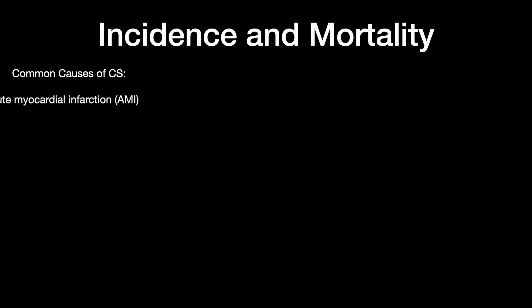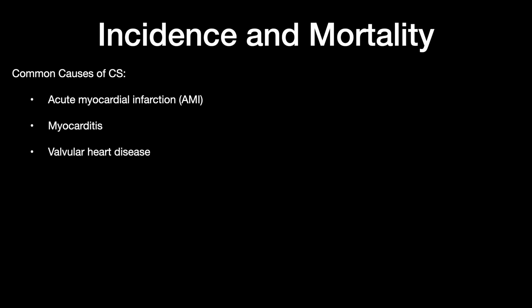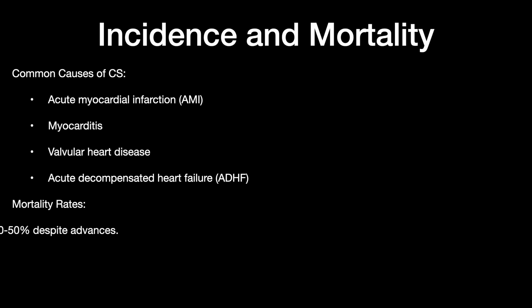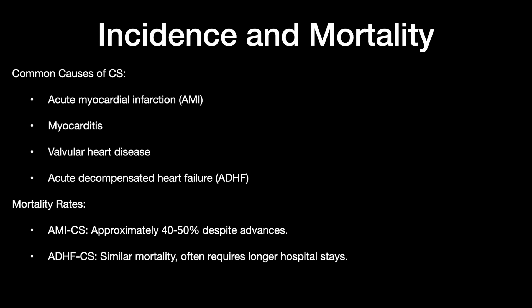Regarding incidence, the common causes of cardiogenic shock include acute myocardial infarction, myocarditis, valvular heart disease, and acute decompensated heart failure. The mortality rate for acute myocardial infarction-related cardiogenic shock is around 40 to 50 percent. In acute decompensated heart failure, mortality is similar and often requires a longer hospital stay.